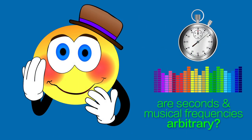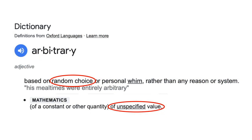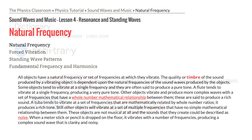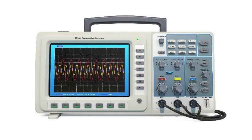So is the second really arbitrary? The word arbitrary can mean a few different things. In math, it means of an unspecified value. It can also mean based on a random choice. But I don't think the second can be defined as arbitrary according to either of those definitions, and neither can the hertz frequency of cycles per second. The choice wasn't random, and the unit holds a very specific value. In fact, frequencies are so specific, predictable, and scientifically replicable that they were able to be measured back in the 1600s, before the invention of the technological devices we use to measure them today.